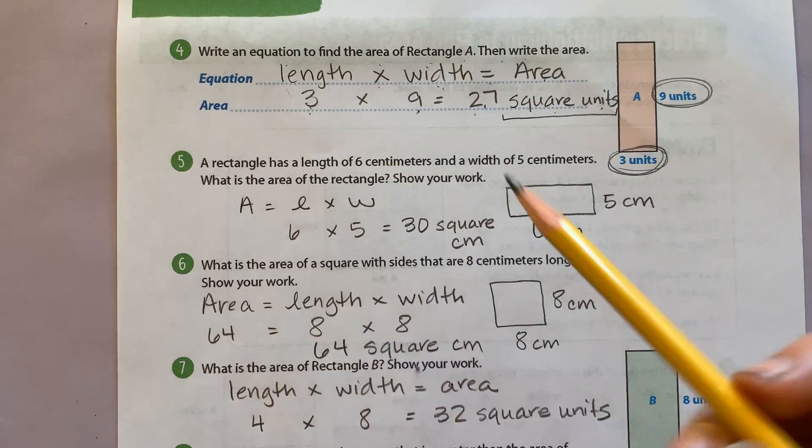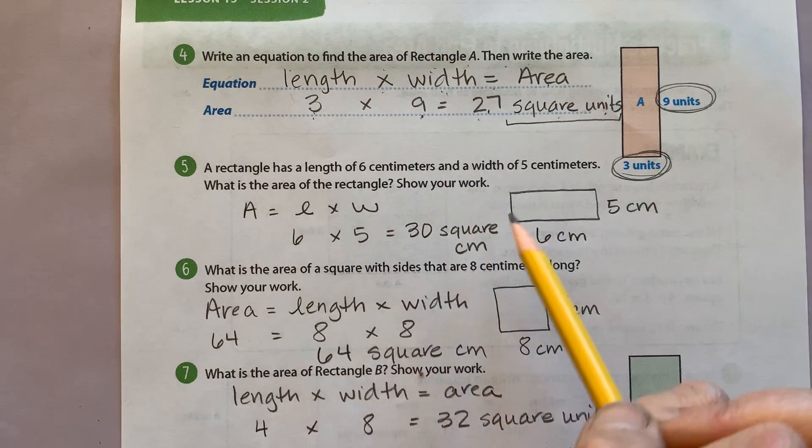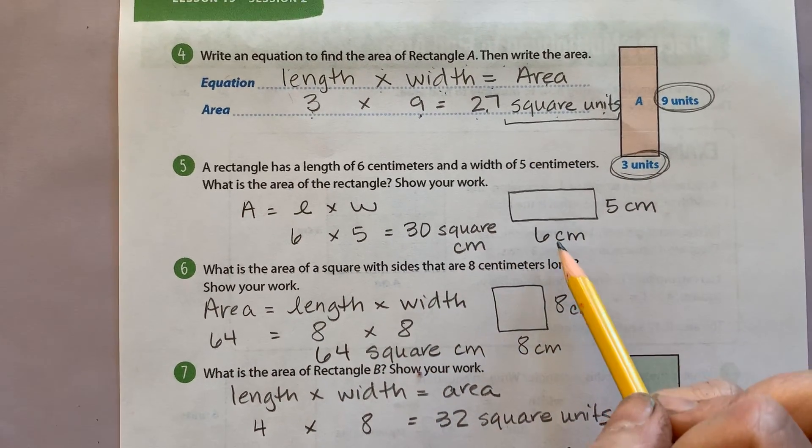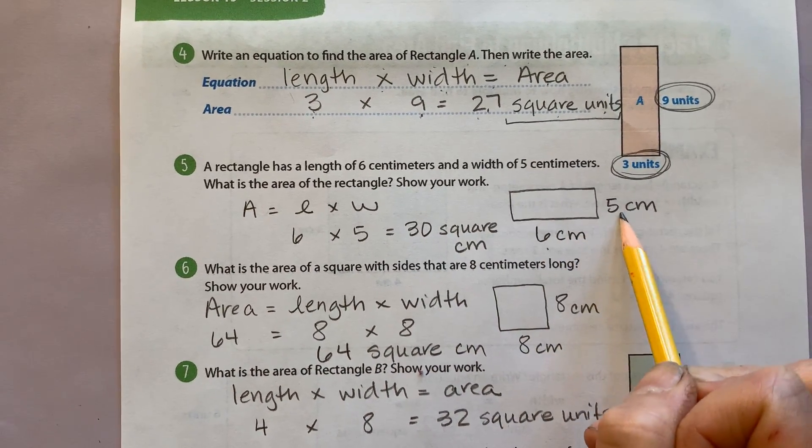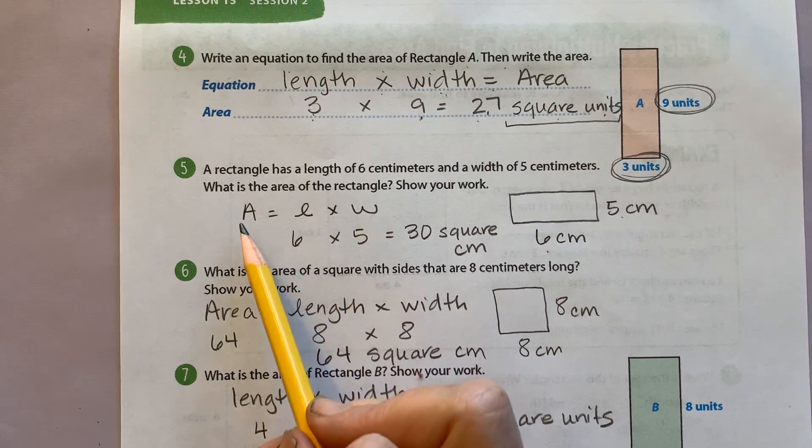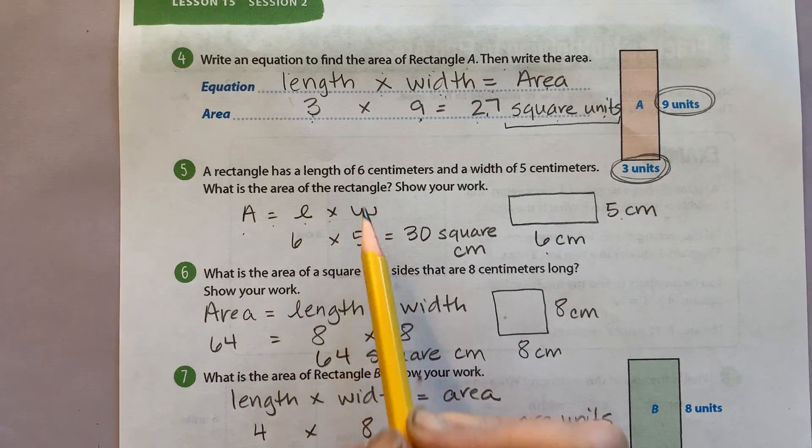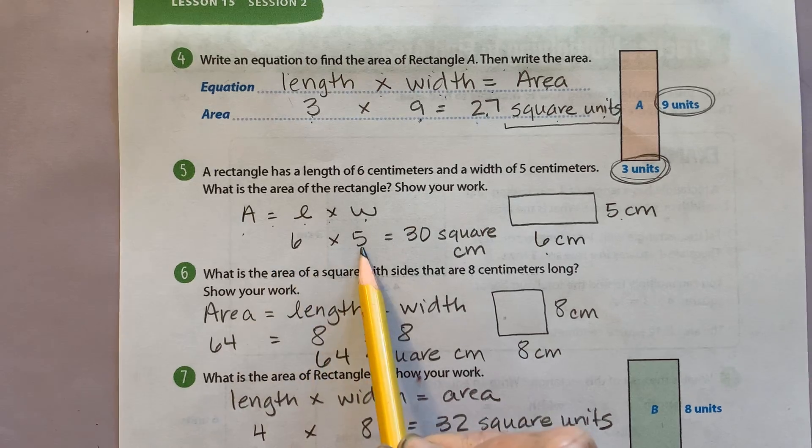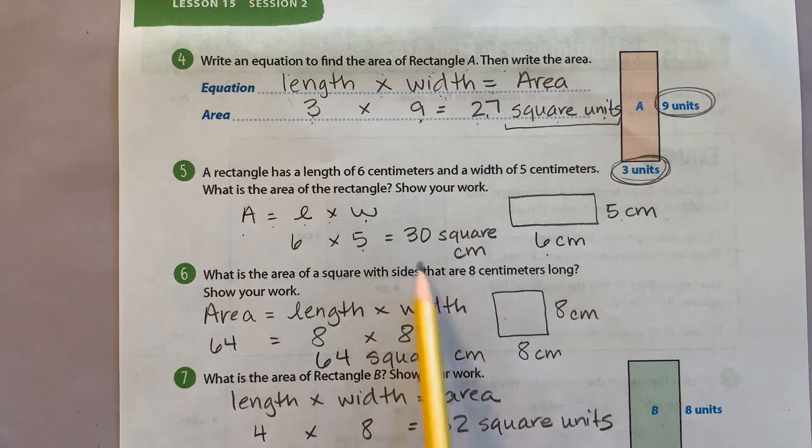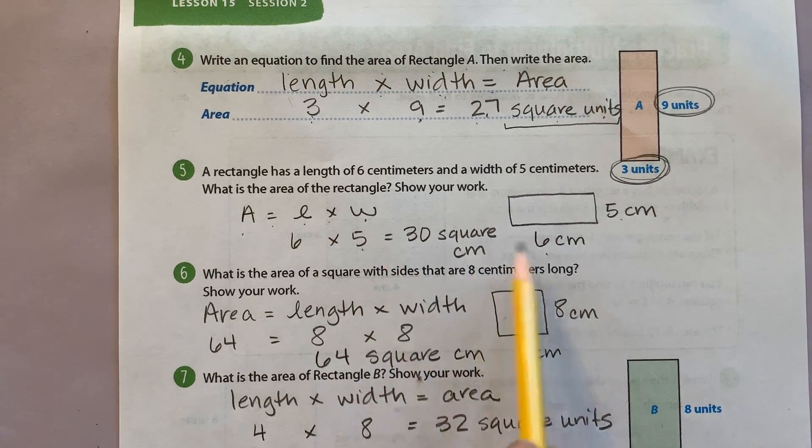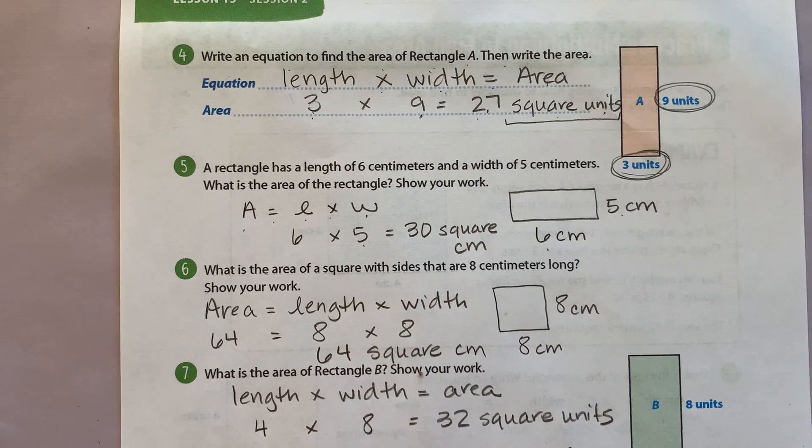Number five, kind of the same thing. I have my rectangle. They told me the length is 6. The width is 5. I wrote my equation area equals length times width. I substituted my numbers in. And I got an answer of 30 square centimeters. Check your work. Fix it if you need to.